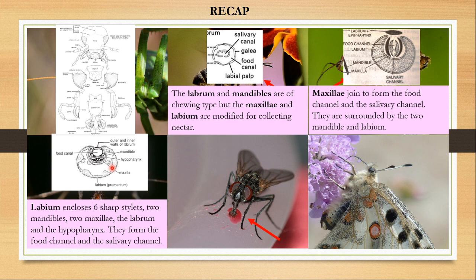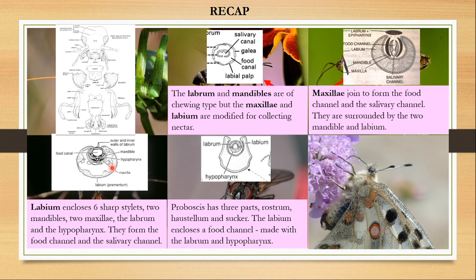The sponging or lapping mouthparts of flies have a proboscis with three parts: the rostrum, then the haustellum, and the distal sucker. The labium encloses a food channel made by the labrum and hypopharynx. The hypopharynx supplies saliva and the food channel draws liquid from a flat surface. The labium forms the suckers with transverse grooves that help draw liquid toward the mouth, and the muscular pharynx draws the liquid through the food channel.